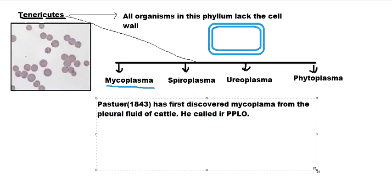Then in the year 1898, Nocard and Roux first obtained their pure culture. In later years, around 1929, Nowak gave the name 'Mycoplasma' to these organisms.